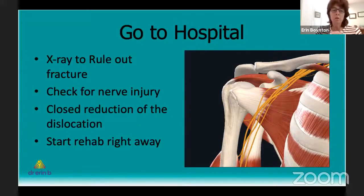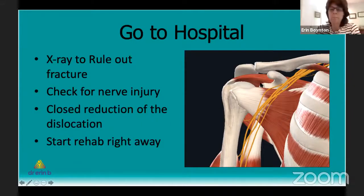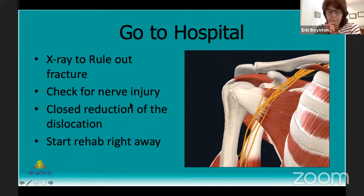It's extremely rare that closed reduction cannot be performed in the emergency room. Over my 30 years, I think only once I've had to take a patient to the operating room — occasionally the long head of the biceps, which inserts on the glenoid, will get trapped in the joint and prevent you from putting the humeral head back. But 99% of the time or more, you're going to have the shoulder effectively reduced in the emergency room. Then it's important that you start rehabilitation.